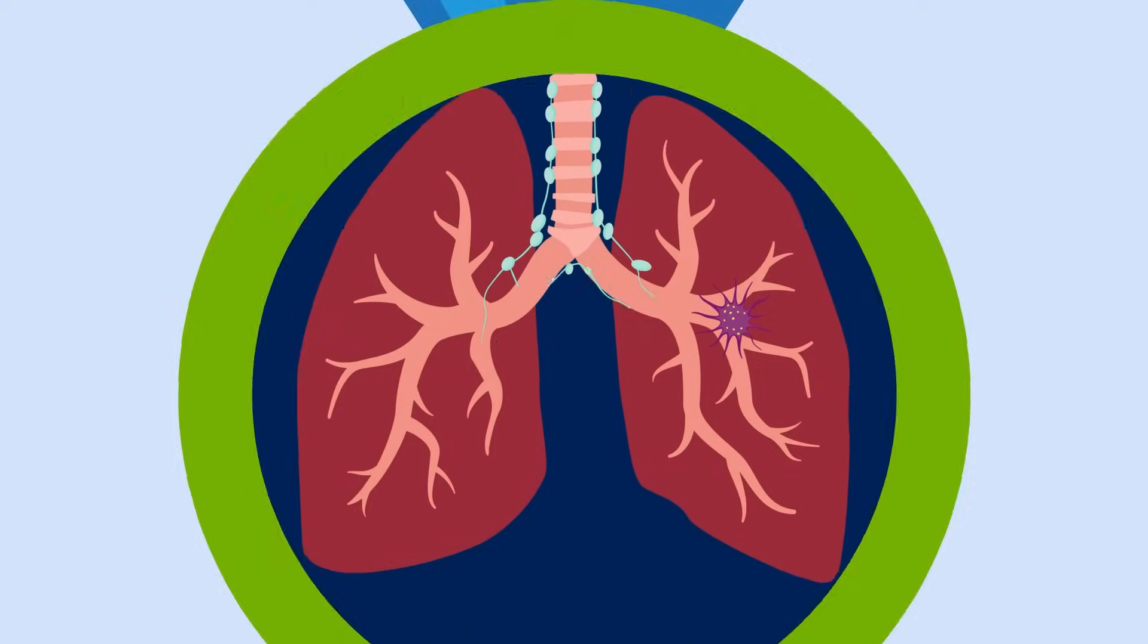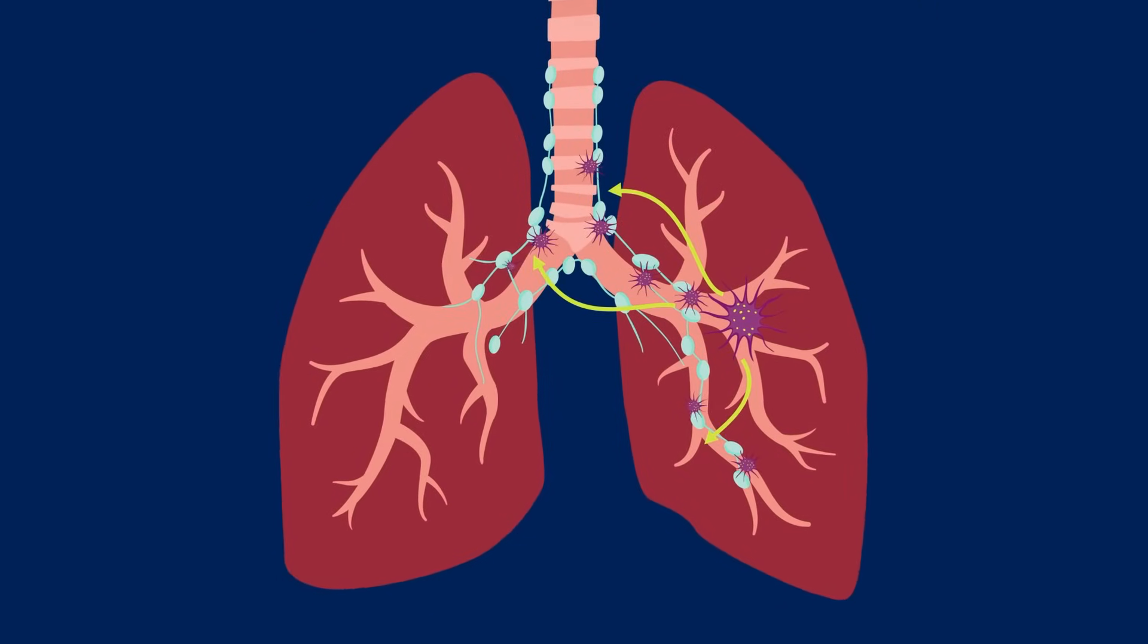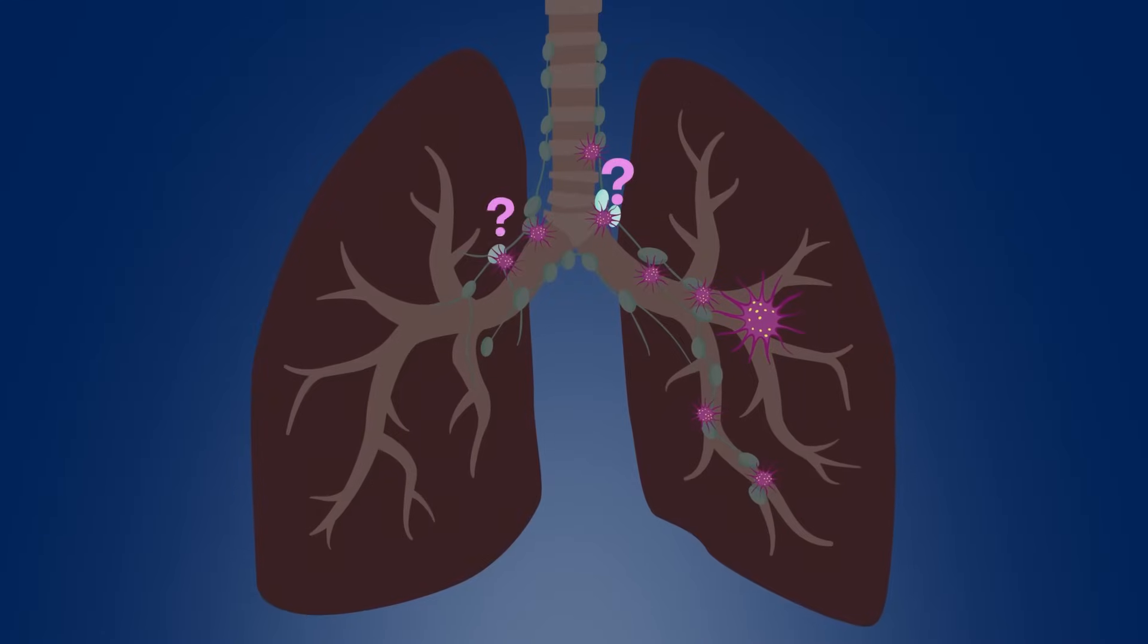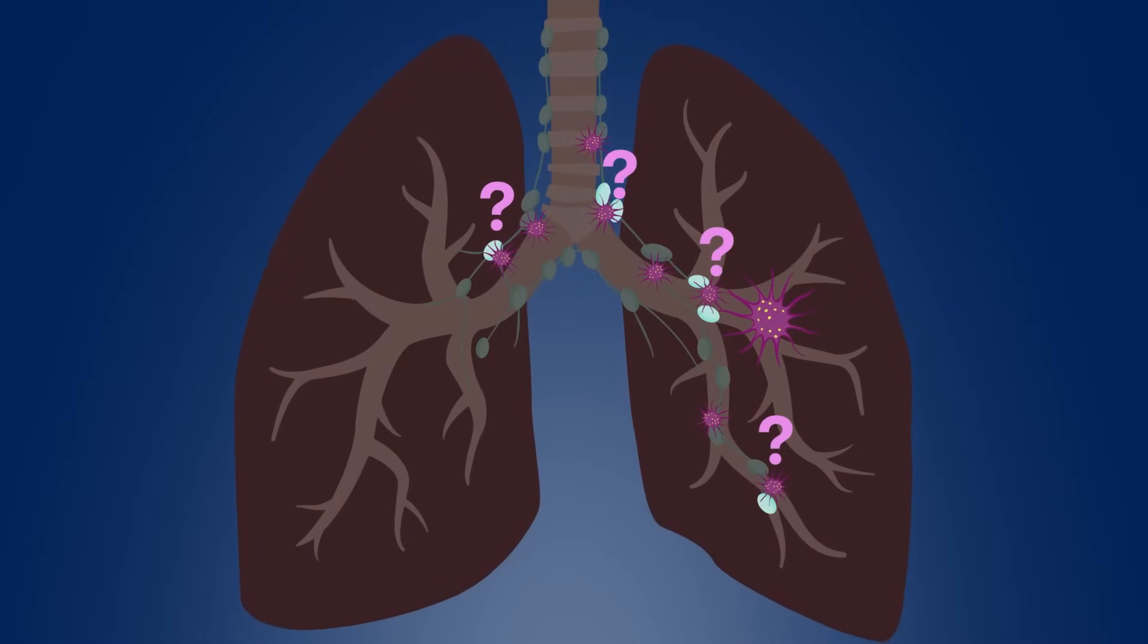Often, lung cancer spreads to the lymph nodes in the lung and chest. If the cancer has not spread to any other organ in the body, it is important to know exactly which of the lymph nodes in the chest are cancerous.